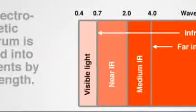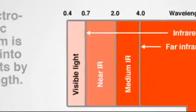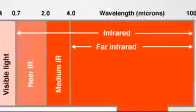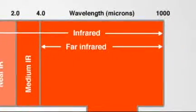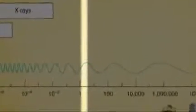The visible spectrum is approximately 0.4 to 0.7 microns in wavelength. For the research that we're doing, we operate at wavelengths between 2.5 microns and 25 microns.